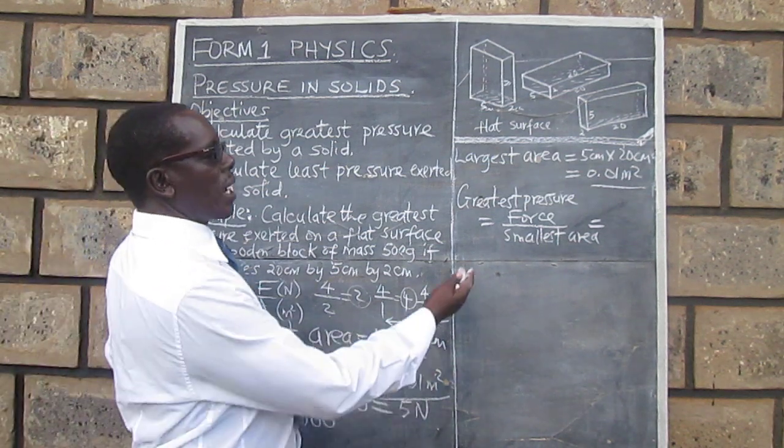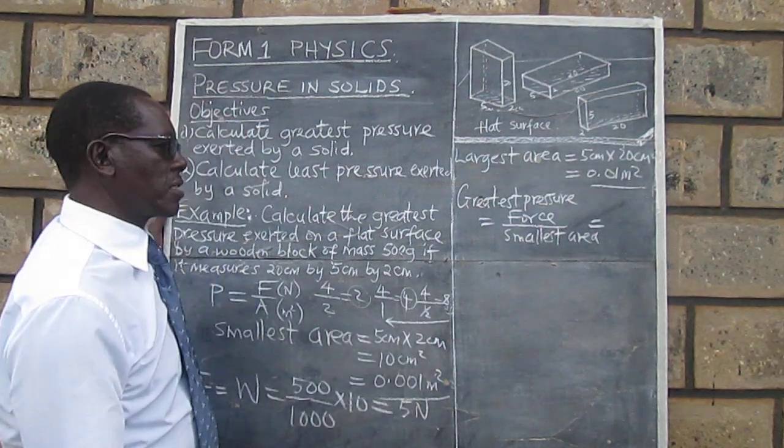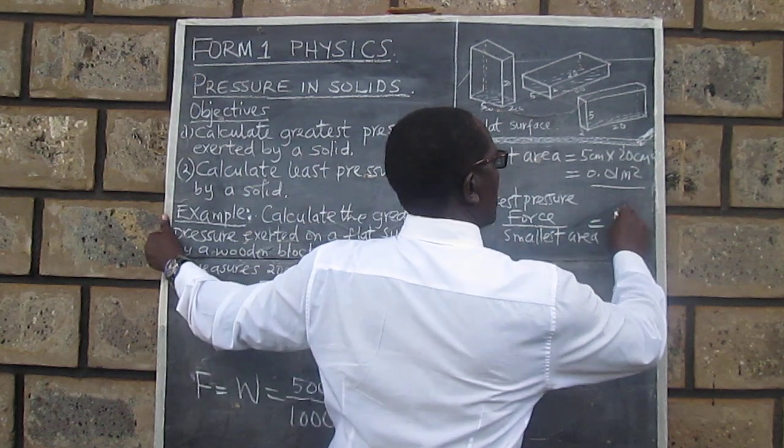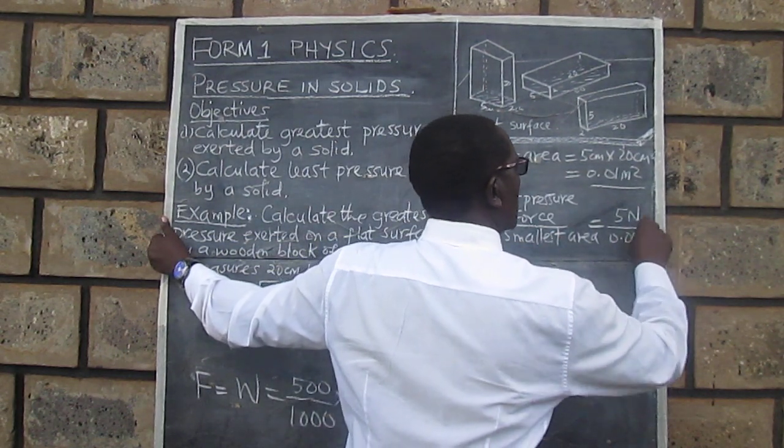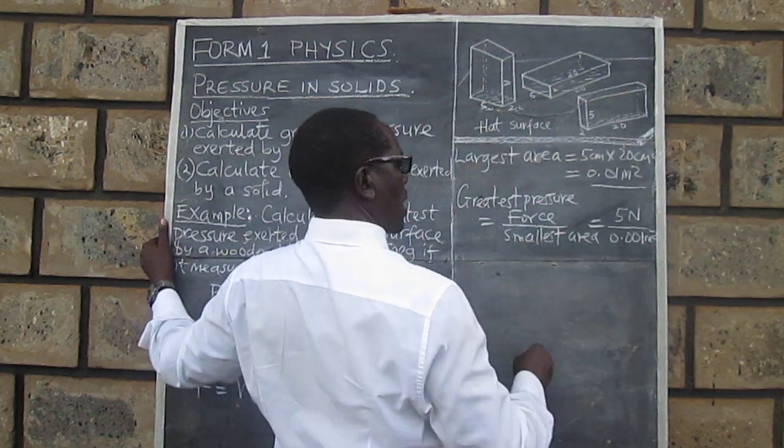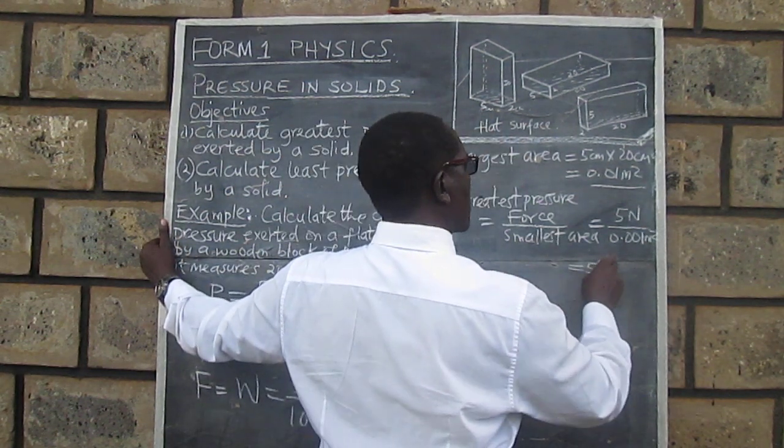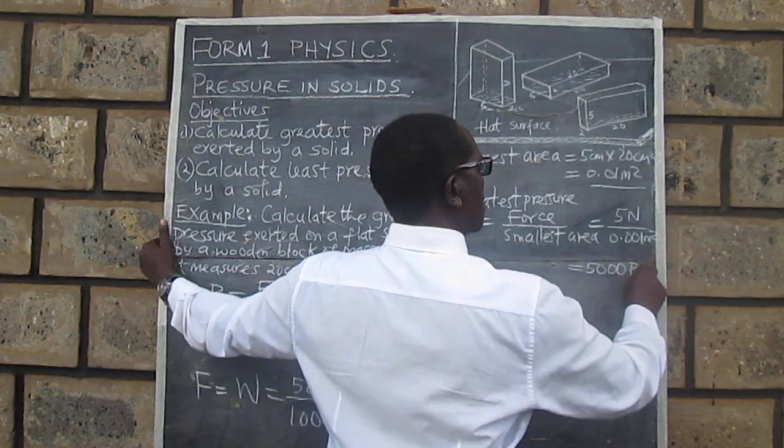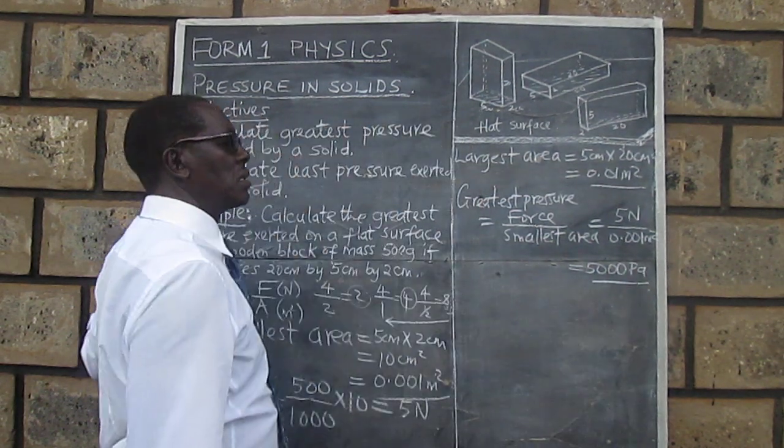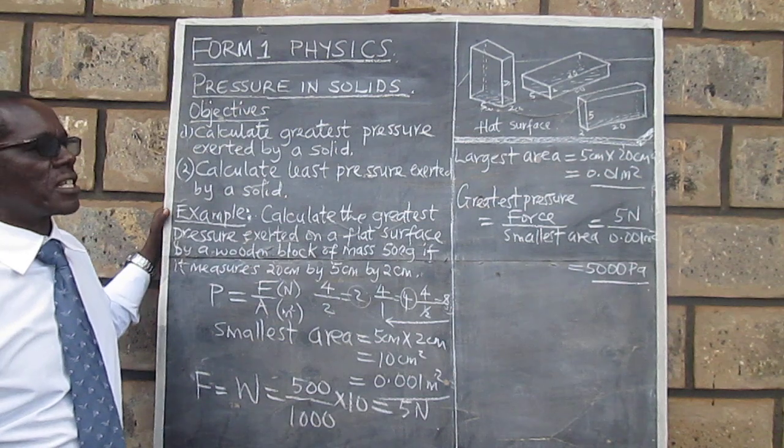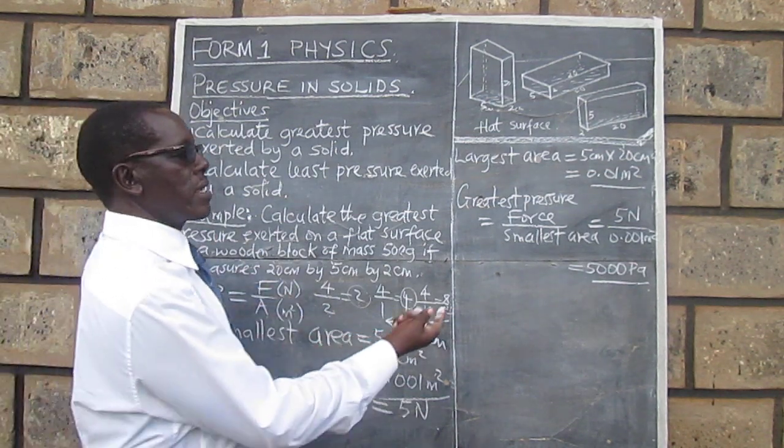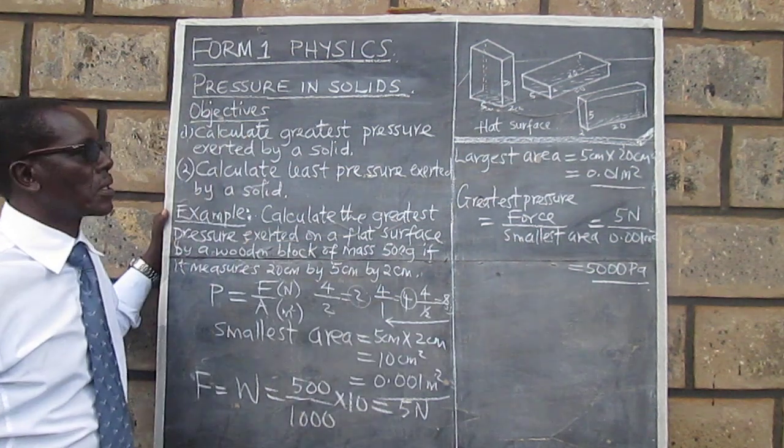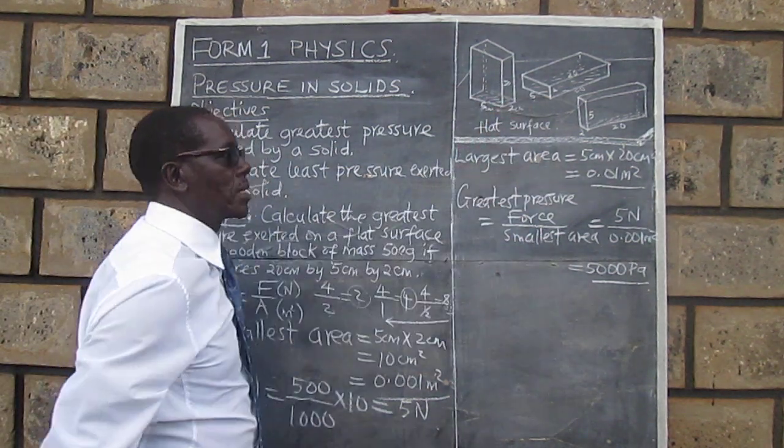So we can now work out the greatest pressure. This force is 5 Newtons divided by the smallest area, and this will give us 5,000 Pascals. So we have the greatest pressure there: force divided by the smallest area, and we have seen that our smallest area in this case is that one.